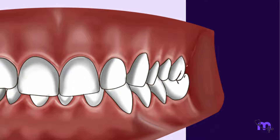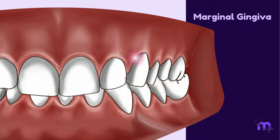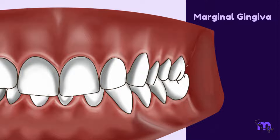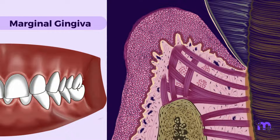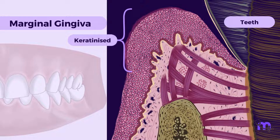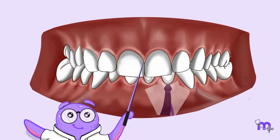Let us first learn about the marginal GENGIVA. The terminating edge or border of the GENGIVA that forms a collar-like covering around the neck of the teeth is known as the marginal GENGIVA. It is referred to as unattached or free GENGIVA, as it is not attached to the underlying structures. Marginal GENGIVA is keratinised and forms a collar around the neck of the tooth.